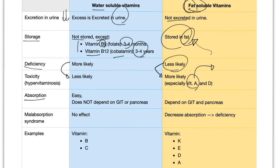Let's talk about absorption. If you are water-soluble, it's very easy to absorb. You do not need any GIT or pancreatic enzymes. But for fat-soluble vitamins, they depend on GIT and pancreatic enzymes such as lipase. Malabsorption syndrome is not going to affect the water-soluble vitamins because they didn't depend on the pancreas to begin with. But for fat-soluble vitamins, you will suffer from decreased absorption and vitamin deficiency if you have a malabsorption syndrome such as celiac disease, pancreatic insufficiency, or A-beta lipoproteinemia.